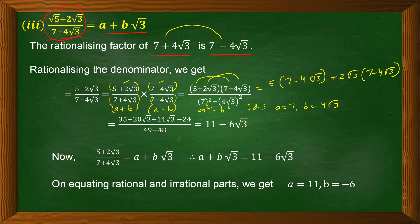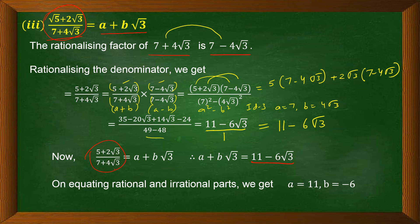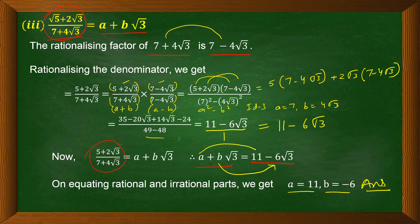After expanding the numerator: 5·7 − 5·4√3 + 2√3·7 − 2√3·4√3 = 35 − 20√3 + 14√3 − 24. Simplifying: (35 − 24) + (−20 + 14)√3 = 11 − 6√3. Since the denominator is 1, the result is 11 − 6√3. Equating with a + b√3, we find a = 11 and b = −6.